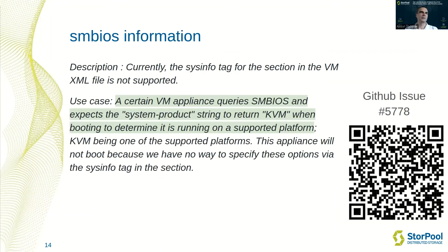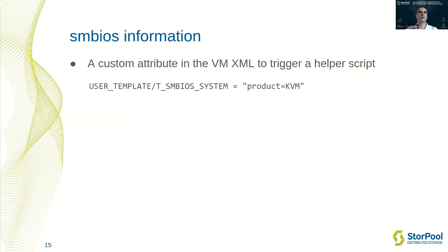Another interesting case is adding SMBIOS information. This example is taken from an open issue in the OpenNebula project on GitHub. In brief, the SMBIOS configuration is needed to provide the system product element as a specific string. A helper script is written that is triggered when a custom variable is defined in the user template section of the virtual machine. The specifics of variable definition could be documented — what other elements could be added, what other variables are supported for SMBIOS configuration, and so on.